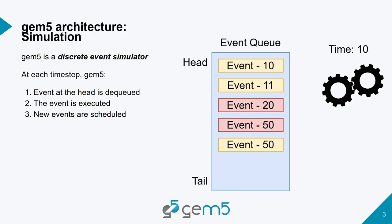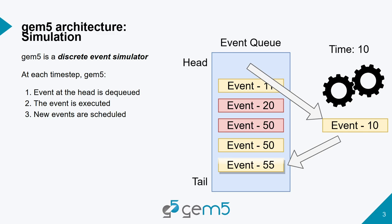The first event is popped off the queue and gets executed. It may or may not generate other events. The events that are generated are inserted back into the priority queue — not necessarily appended to the back, but inserted in order. It's a priority queue.